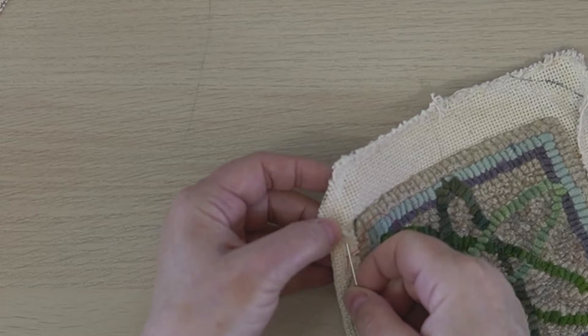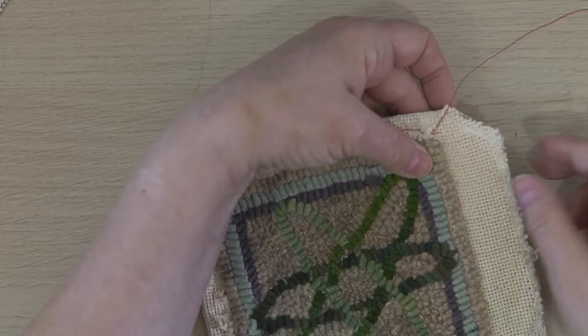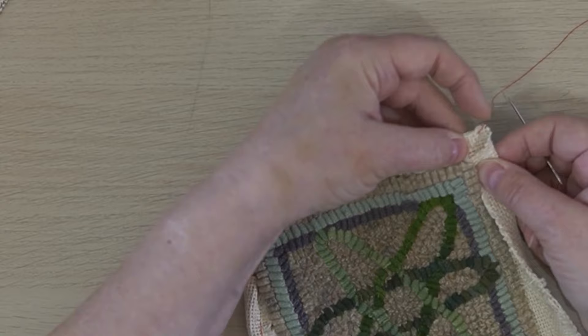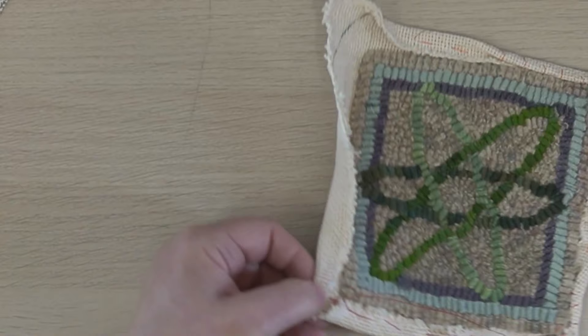And then I lay that corner down and I get that corner attached so it stays in place. Next what I do is I come over to this other side and I fold the next corner down and with a little bit of manipulation you can get these inner edges to sort of meet. That's all I'm worried about right now. I'm not worried about this.